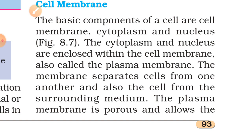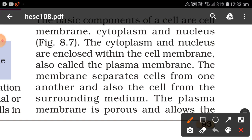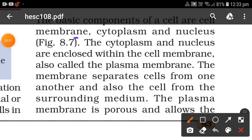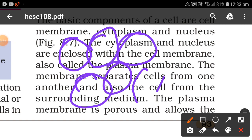The cytoplasm and the nucleus are enclosed within the cell membrane, also called the plasma membrane. The membrane separates cells from one another and also the cell from the surrounding medium. The plasma membrane is the outermost part of animal cells.